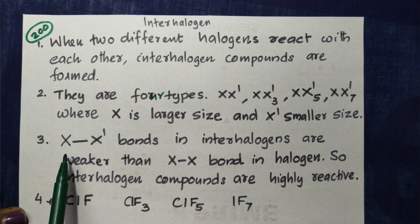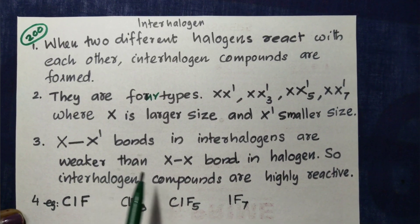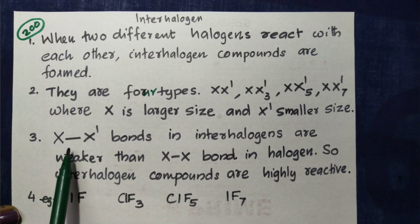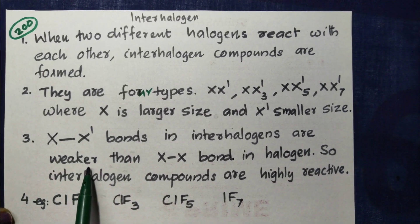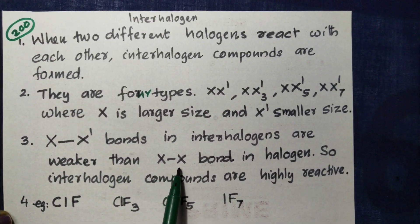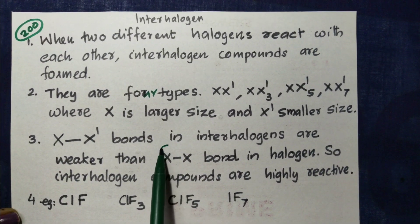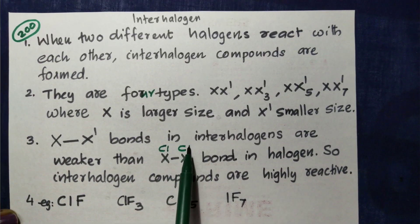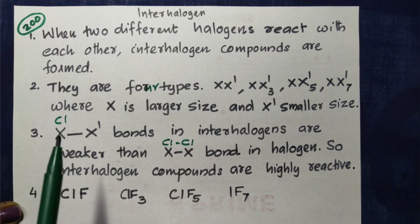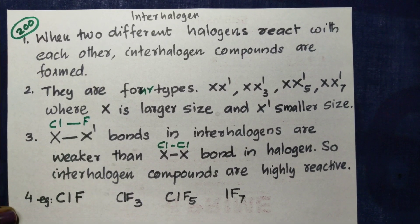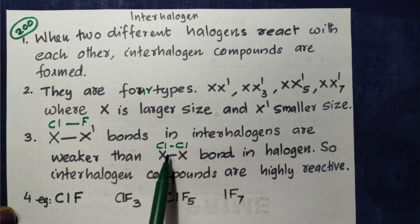Interhalogens are more reactive than the halogens. This is because the X–X′ bond is weaker than the X–X bond. For example, the chlorine-chlorine bond is very strong, but the chlorine-fluorine bond is weak, so ClF is more reactive than Cl2.